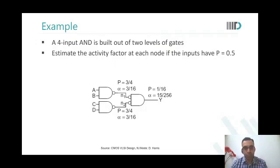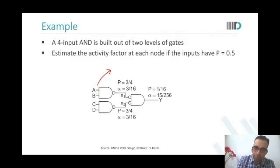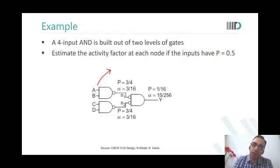A student asks to redo the calculation. N1 will be 1 when A is 0 or B is 0. There are 4 combinations of A and B possible, and in 3 of those cases at least one of them is 0. So the probability is 3/4.